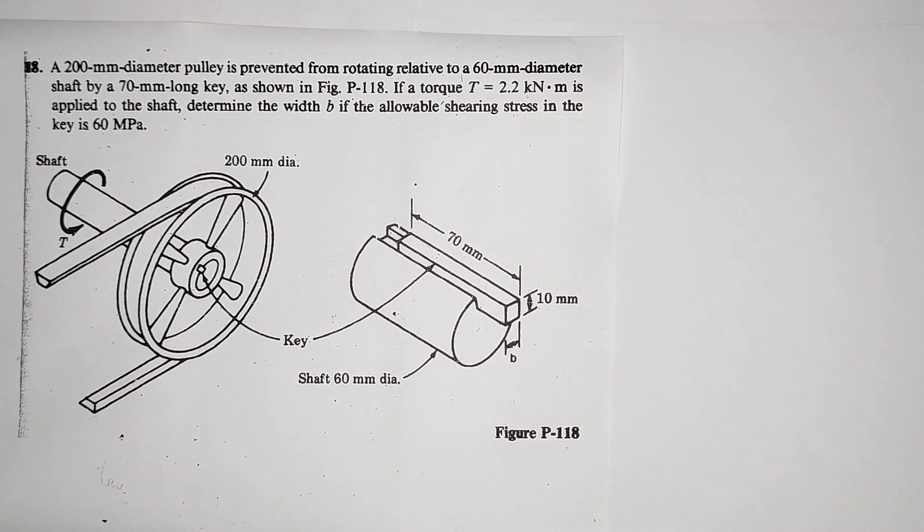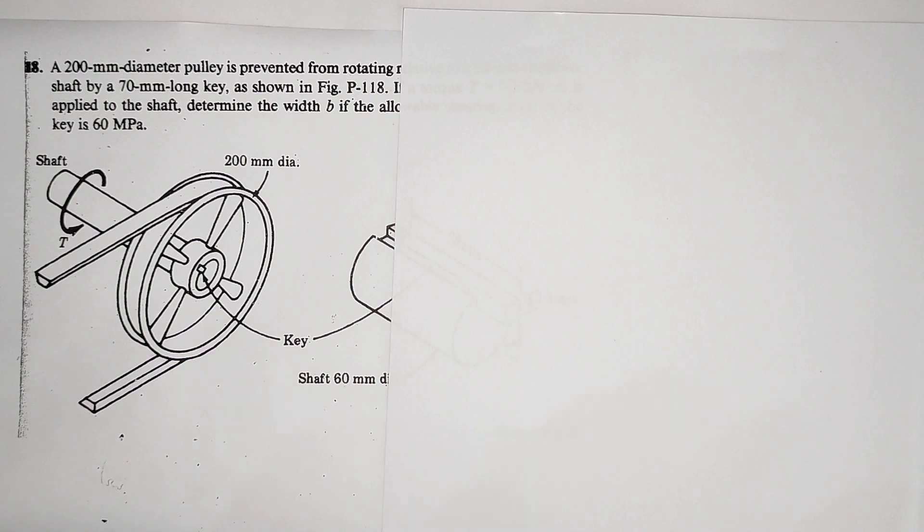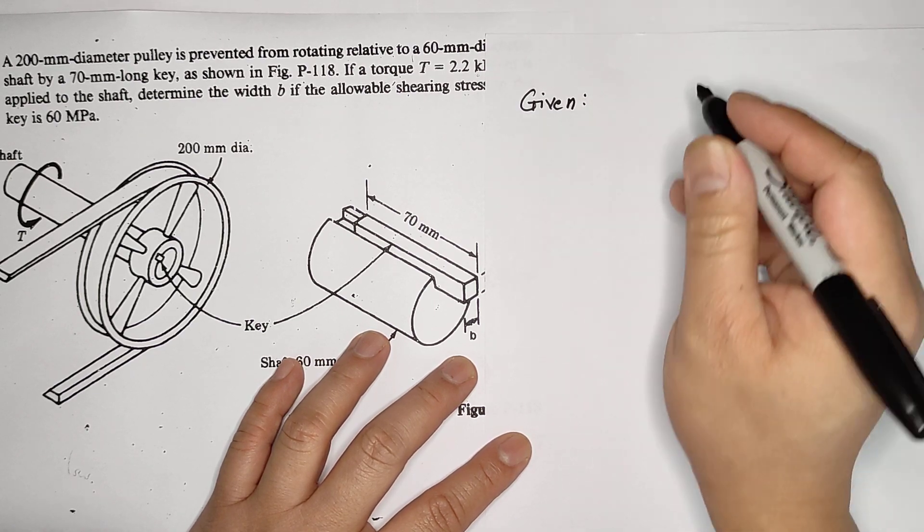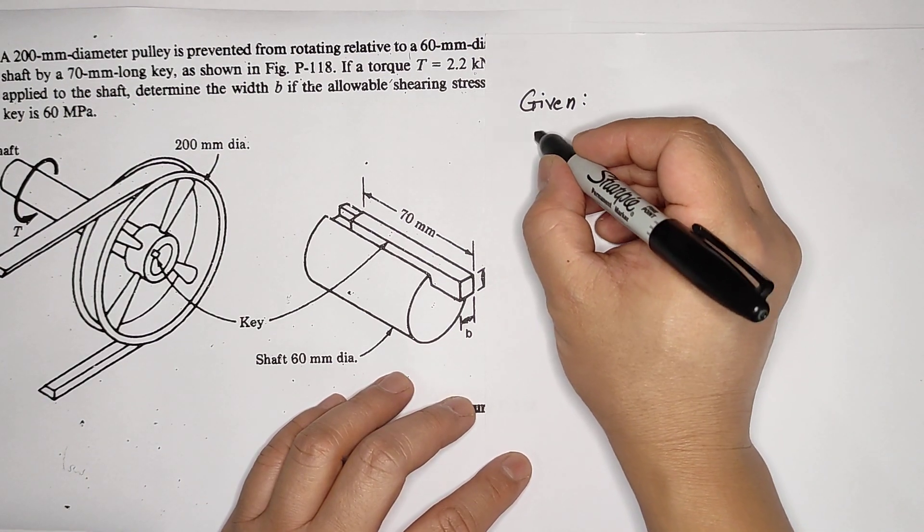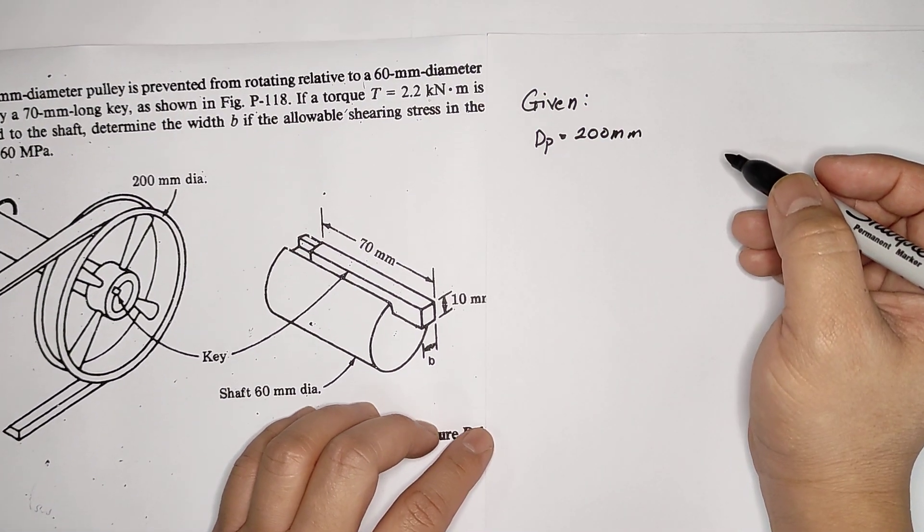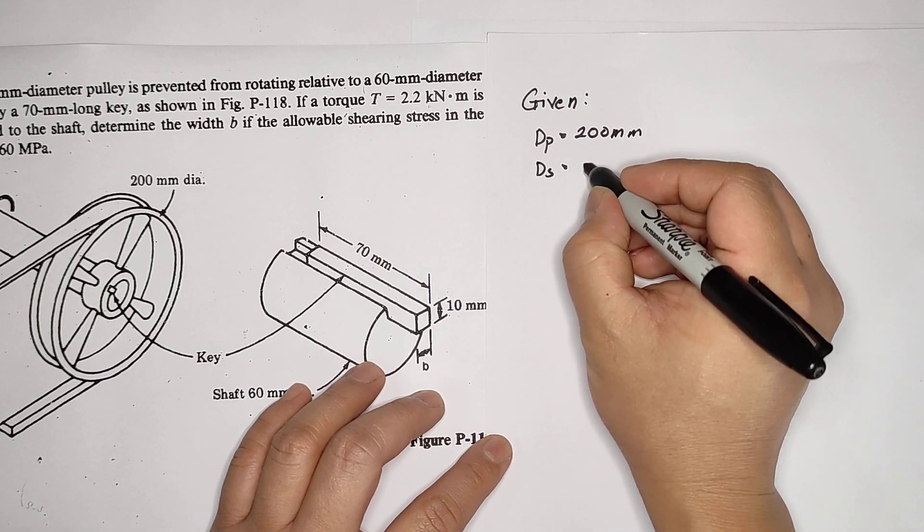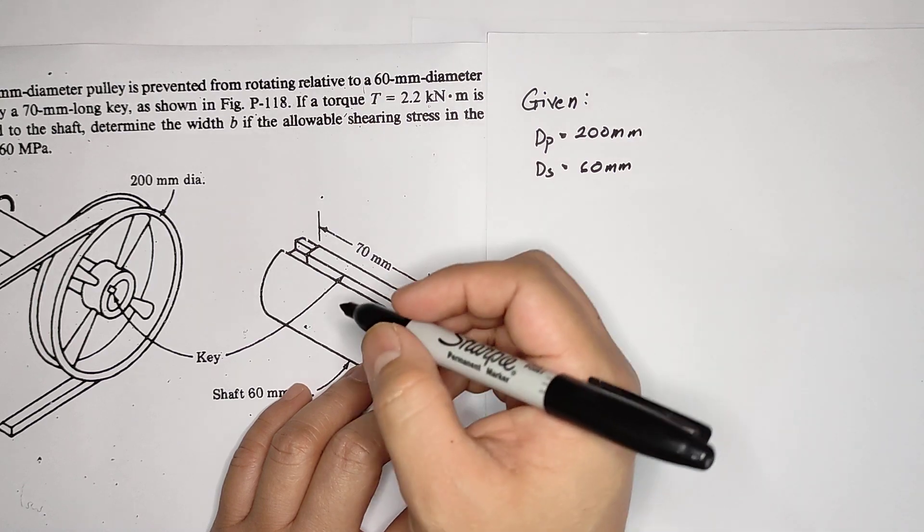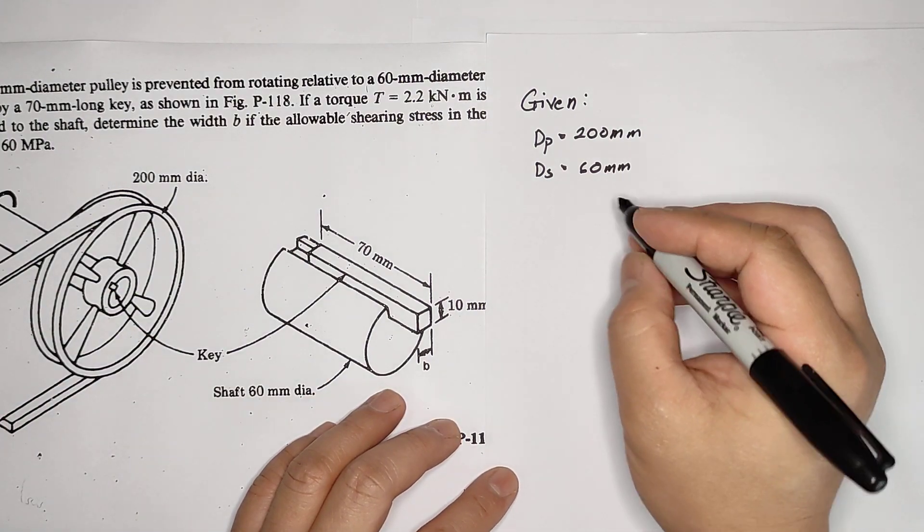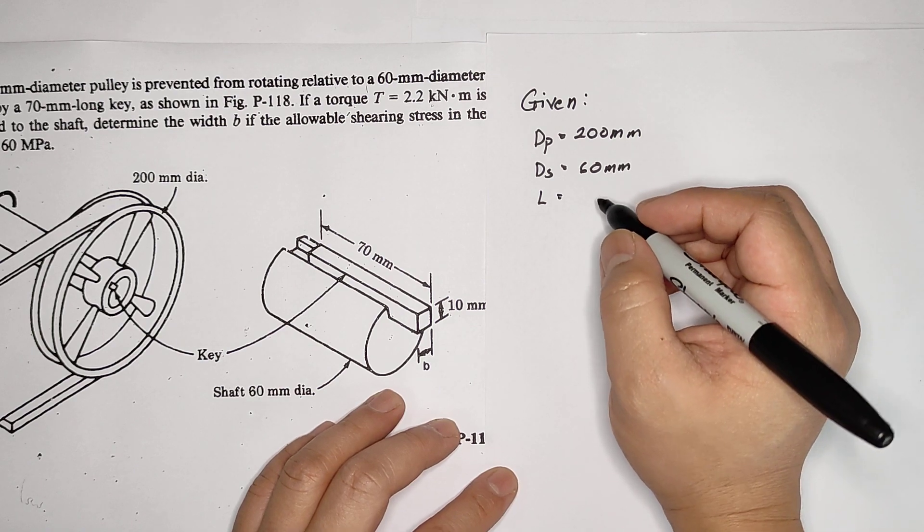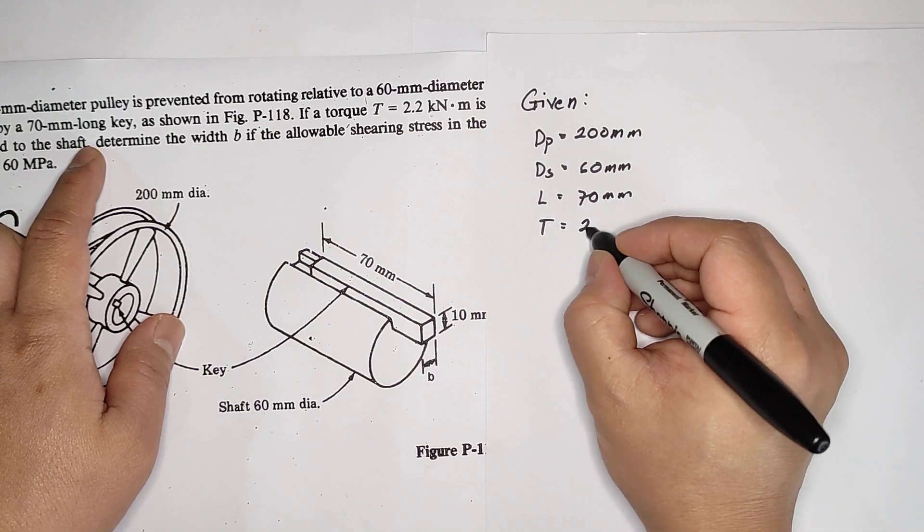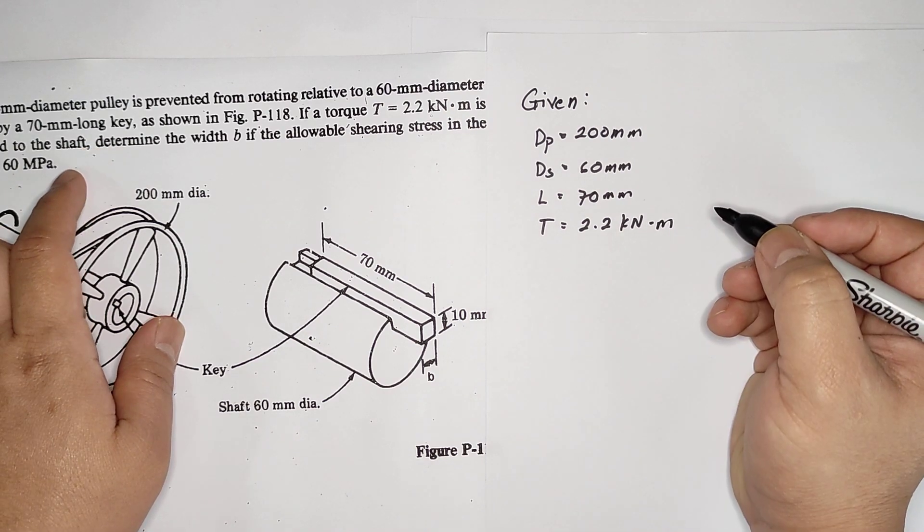So let's start with the given. You have 200 mm diameter of the pulley, the diameter of the shaft is 60 mm, and the key length is 70 mm. Then the torque is 2.2 kNm.